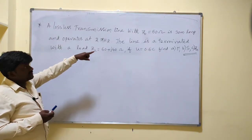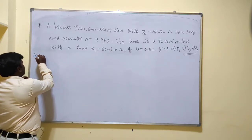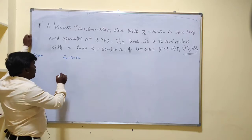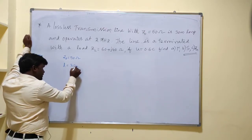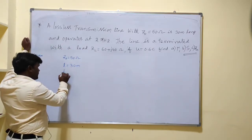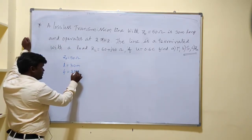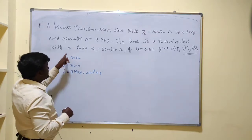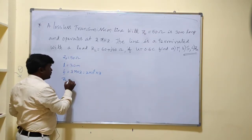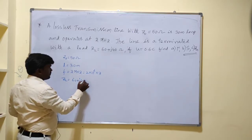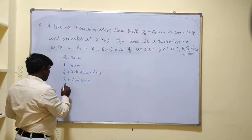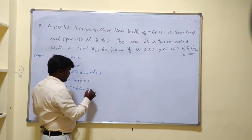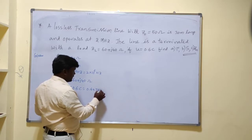A lossless transmission line with Z0 equal to 50 ohms is 30 meters long. It operates at 2 MHz, i.e., 2×10^6 Hz. The line is terminated with a load impedance ZL equal to 60 plus j40 ohms. The phase velocity u is given as 0.6c, where c is the speed of light in vacuum, i.e., 0.6 × 3×10^8 meters per second.